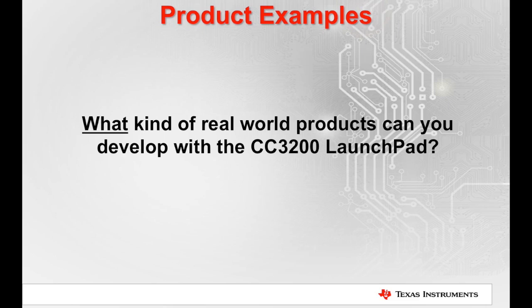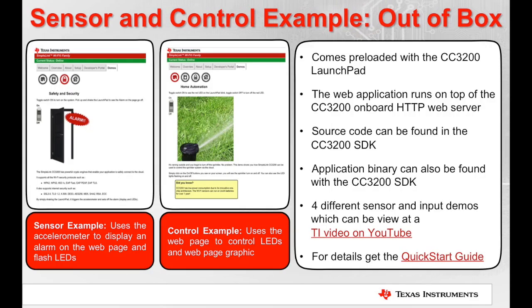Let's bring this all together and see what kind of real-world products you can develop with the CC3200 Launchpad. The out-of-box example has some great demos which show you how sensors and inputs work. It runs on top of the CC3200 HTTP web server and gives you ideas on how you could develop your own products using the web server. You can obtain the source code and binaries from the SDK. There are four different demos. The safety and security example shows how the accelerometer can be used to display an alarm on the web page and flash LEDs on the CC3200 Launchpad. The home automation example shows how you can remotely control a virtual sprinkler.